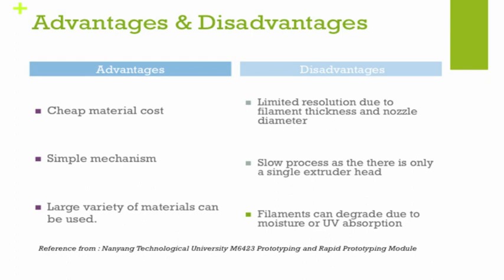For the disadvantages: since polymer is extruded through a nozzle, there is limited resolution based on how small the nozzle diameter can be and the filament thickness. FDM is also a very slow process, as the single extruder head must go line by line over the entire cross-section — future episodes will cover methods that can print an entire area at once, which are faster. Lastly, because FDM uses solid filaments, these can degrade due to exposure to moisture or UV light, which can change the properties of the polymer.